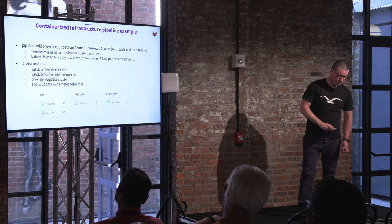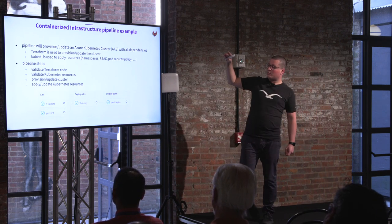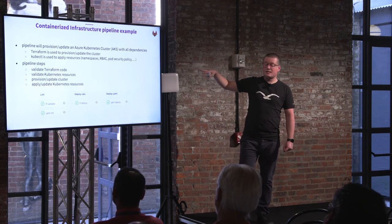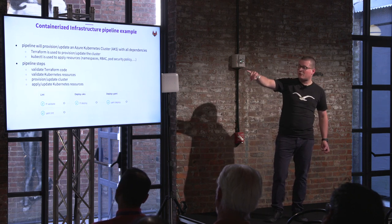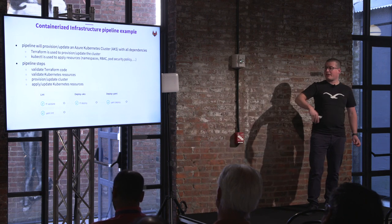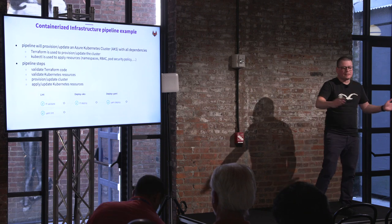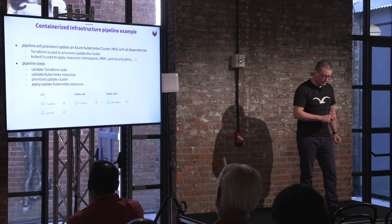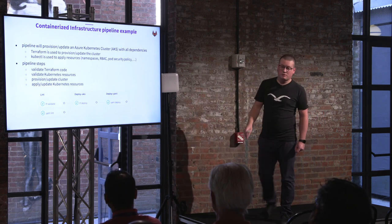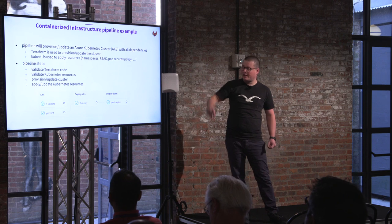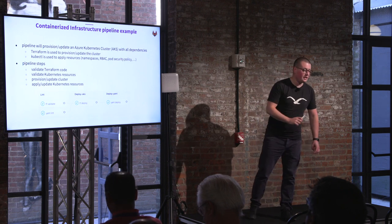Here's an example pipeline. I will share the full code later. We are building and updating an Azure Kubernetes cluster — the managed Kubernetes in Azure — using Terraform to build up the cluster, then running basic Kubernetes resources like namespaces, RBAC, and pod security policies. We have four pipeline steps: first validate the Terraform code, simultaneously validate the Kubernetes resources, then provision or update the cluster depending on our change, and finally apply or update the Kubernetes resources.